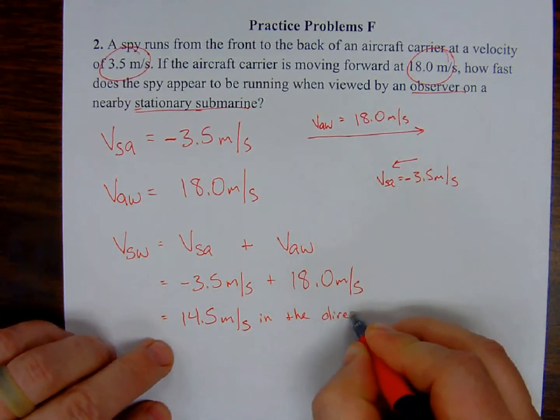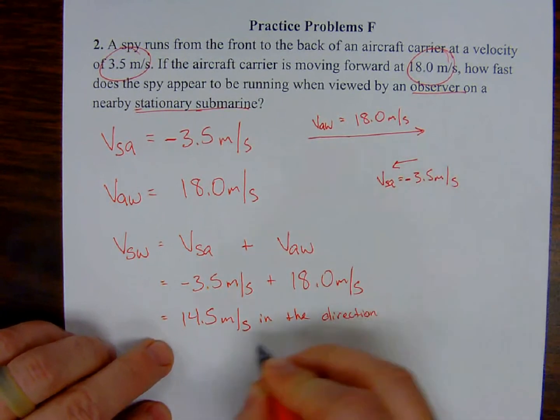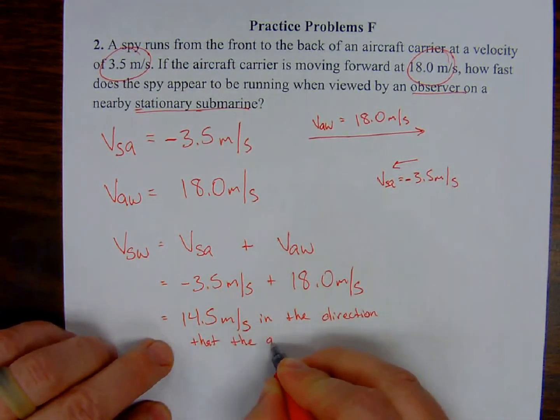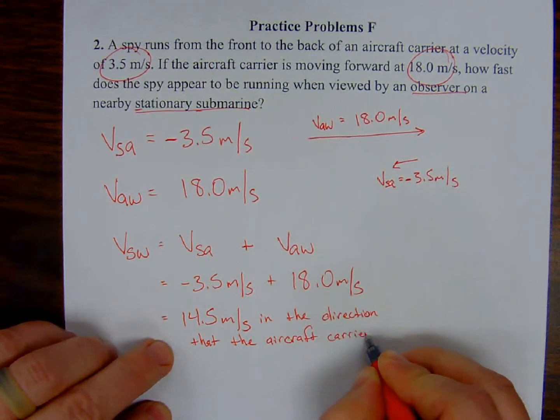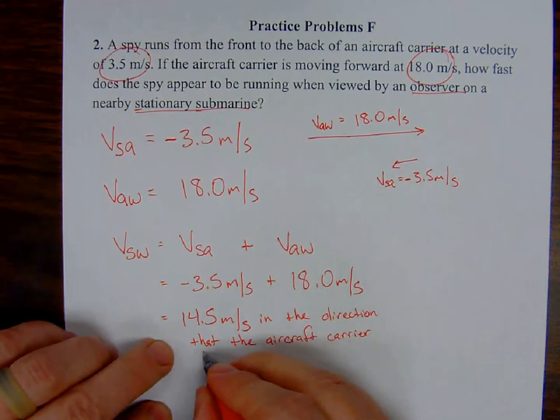I'm just going to come up with a simpler way to write in that direction. But you have to say that the spy is actually moving in the same direction as the aircraft carrier. Just not quite as fast as the aircraft carrier because the spy is actually running from the front to the back.